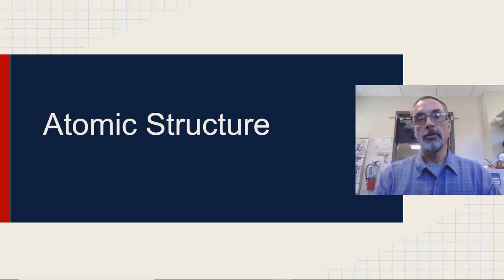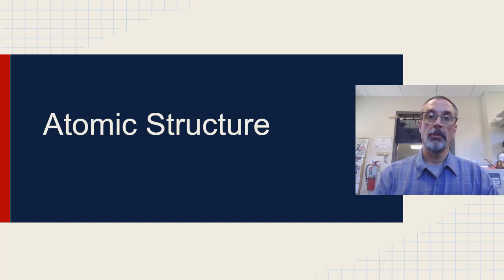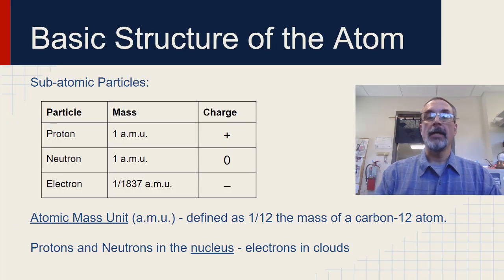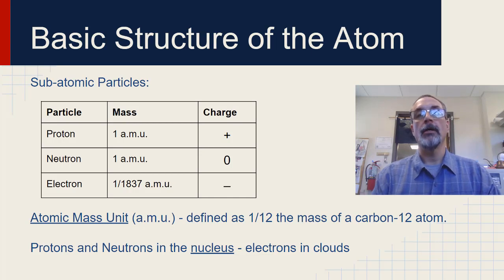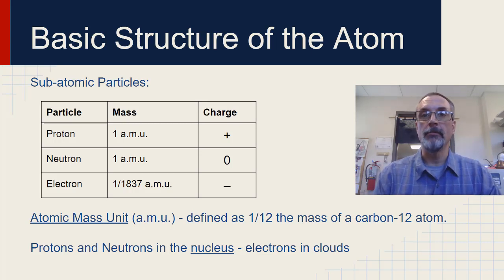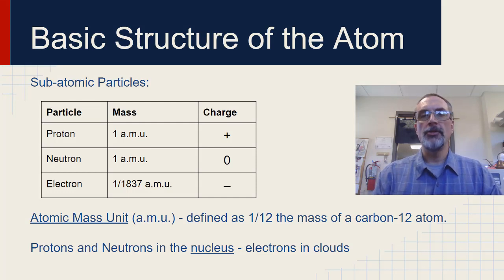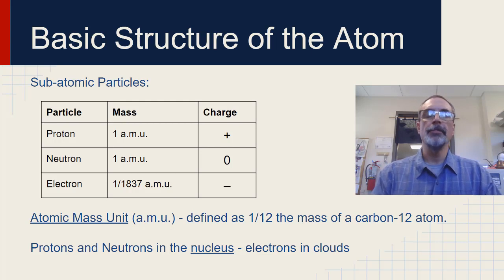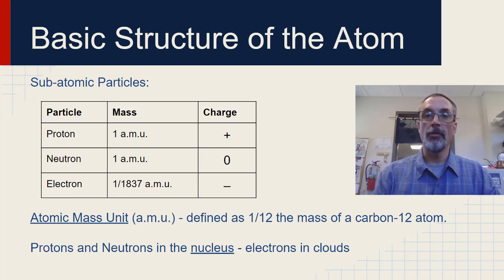Let's talk about the structure of atoms — atomic structure. We're going to take a look at just the basics right now. There is an entire area of physics devoted to really looking at what atoms are made of, which is pretty amazing if you think about the fact that we can't even see them. There are three subatomic particles — subatomic meaning they're smaller than atoms themselves.